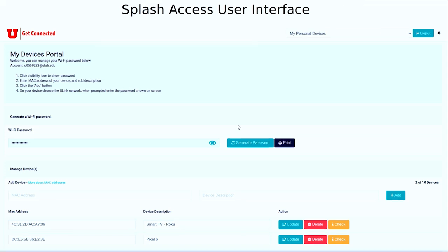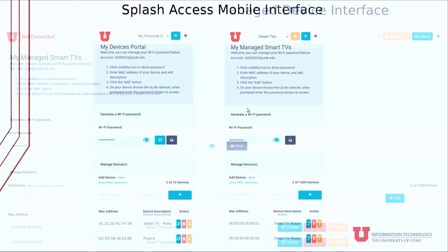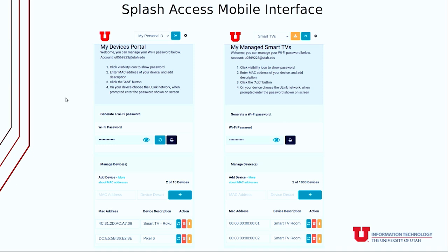This works for users with personal devices, and it also works for users that manage lots of low-capability IoT devices. For example, a manager of smart TVs can come into the portal and use the yellow import button at the top to import in bulk — and all of these devices could use the same IPSK. Here's an example of how it looks on a mobile device: it's very simple and easy to work with. Splash Access did a great job with that.